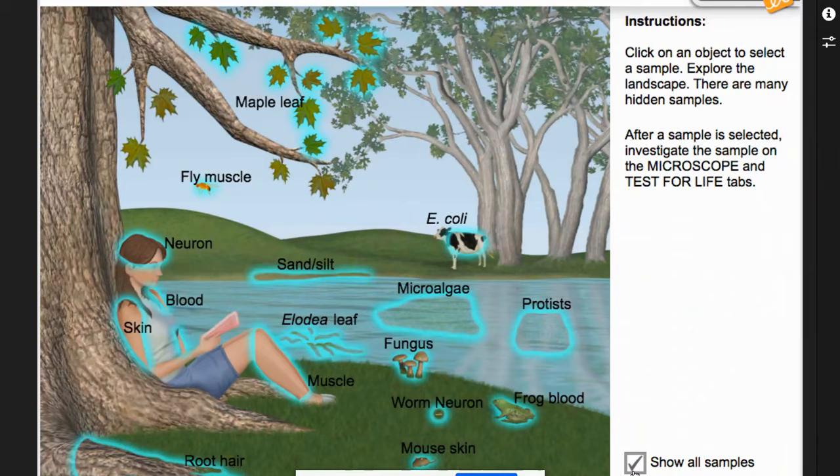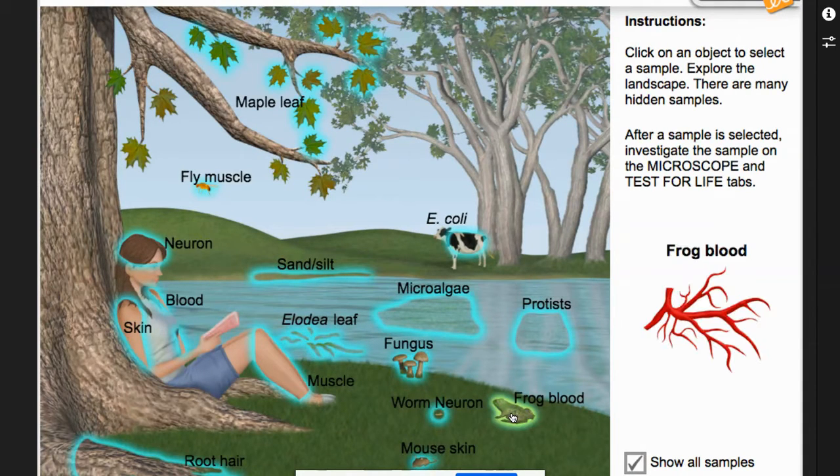Okay, I'm going to go with Frog Blood. I'm going to click on Frog Blood. Now with this, it'll show you kind of what we're looking at. But up here, these three tabs are really what you want to do. I'm going to ignore this Test for Life until we get in class, but this is what I want you to work on: the microscope.